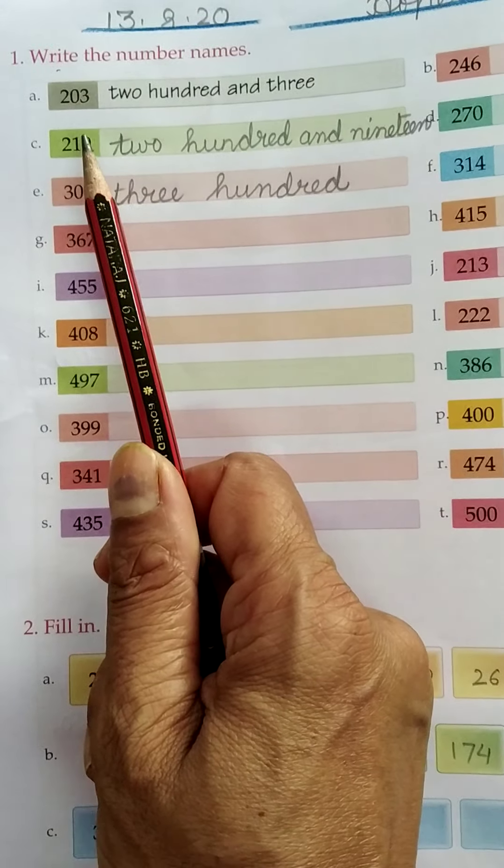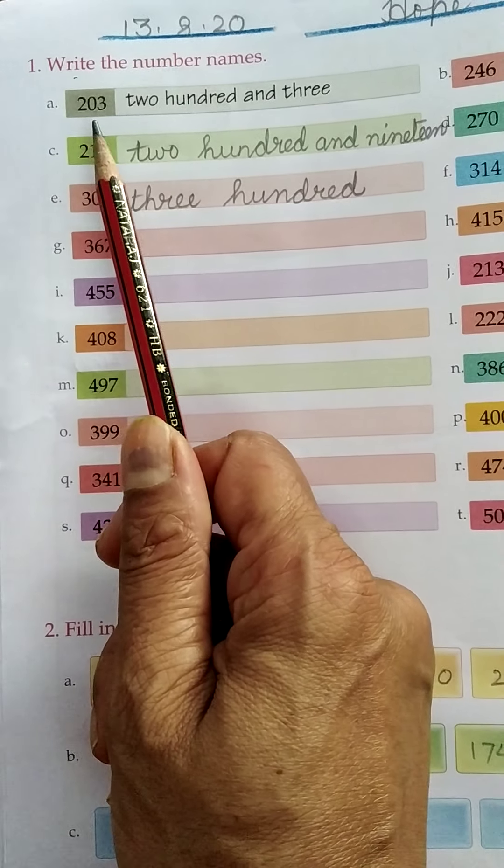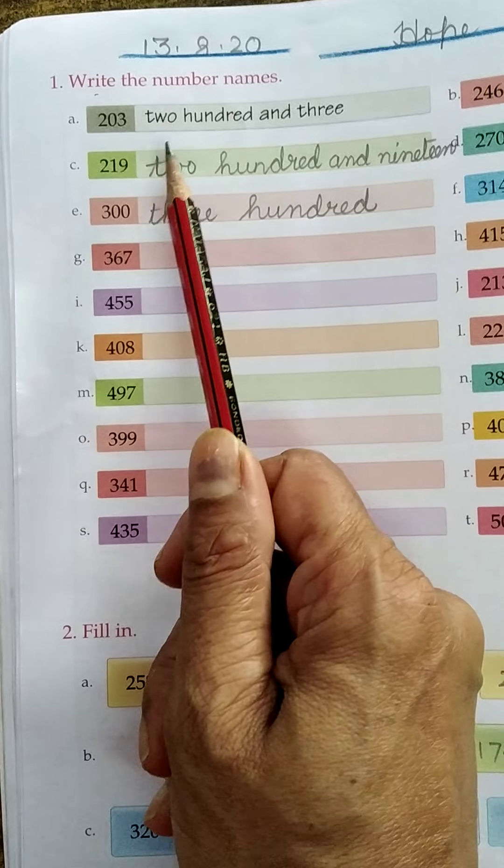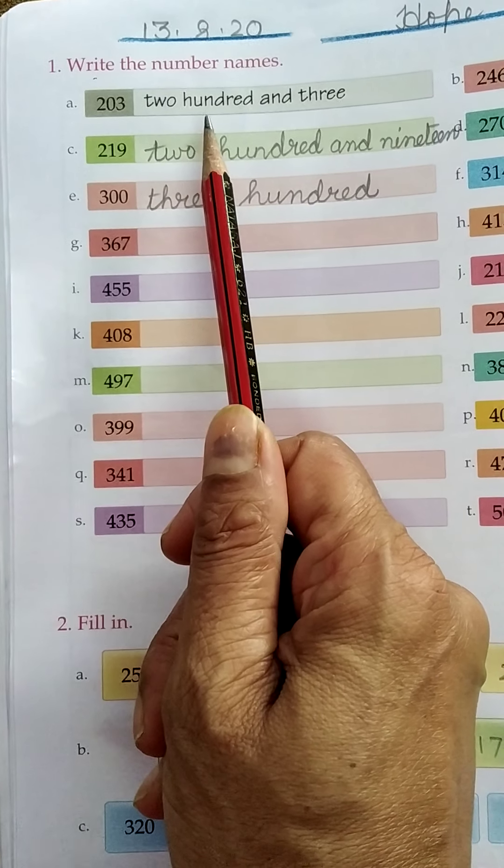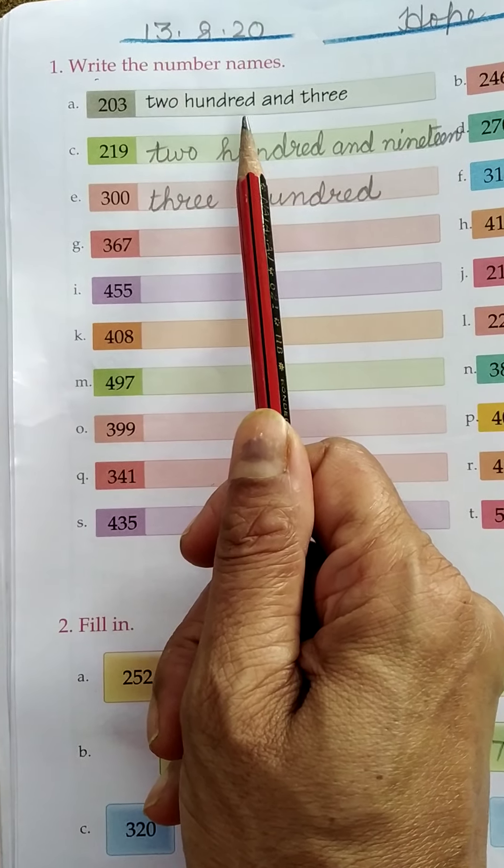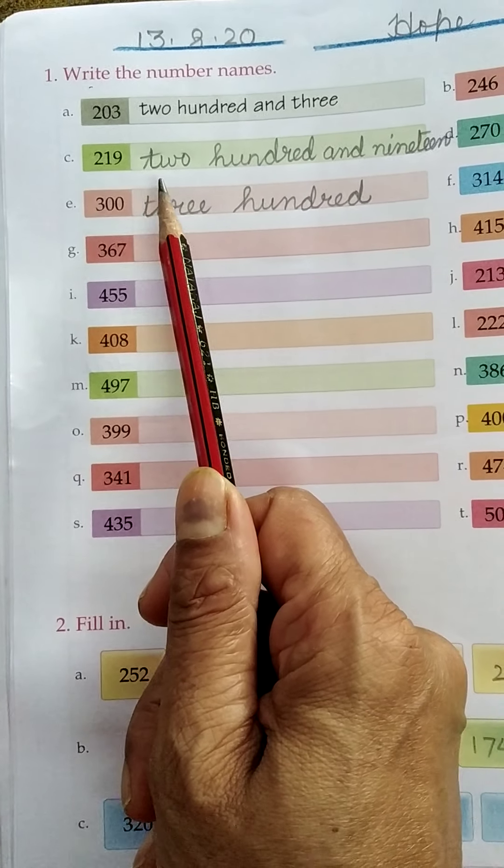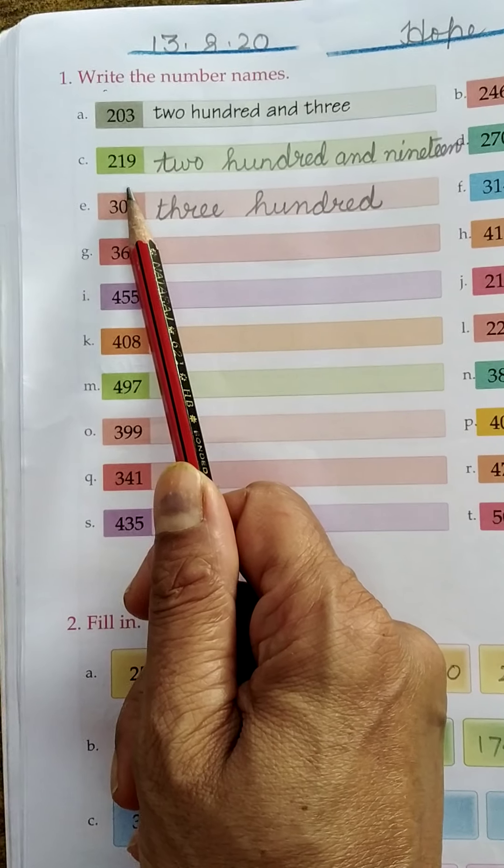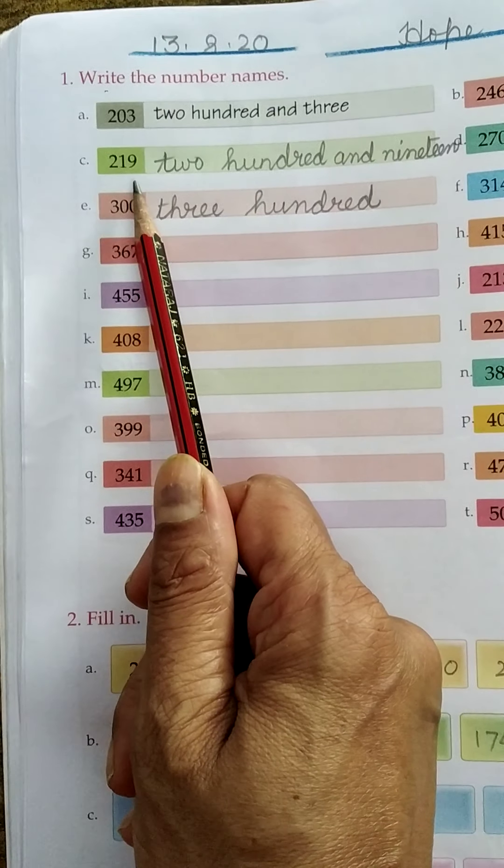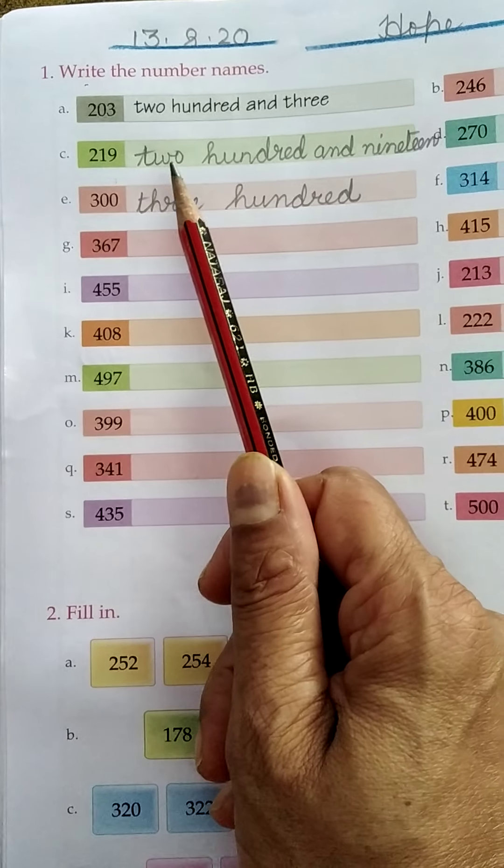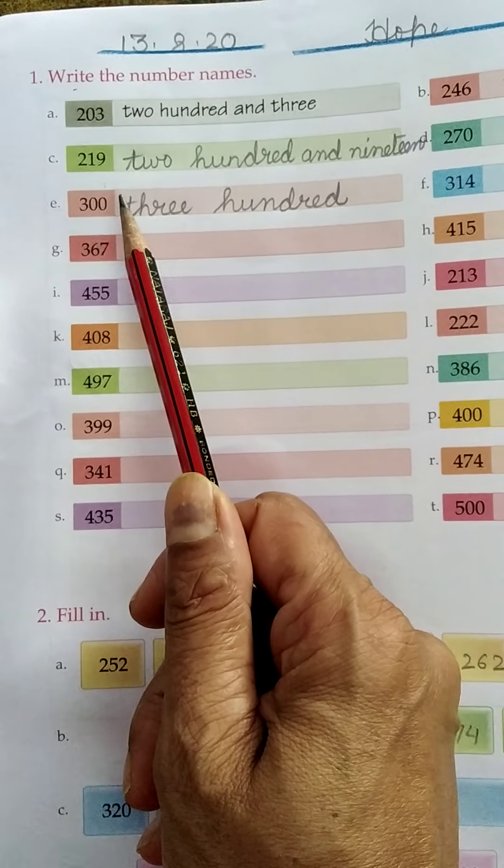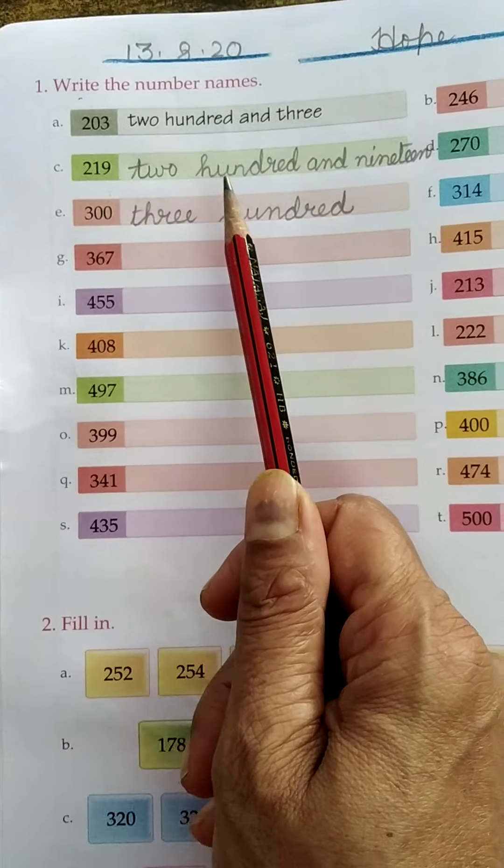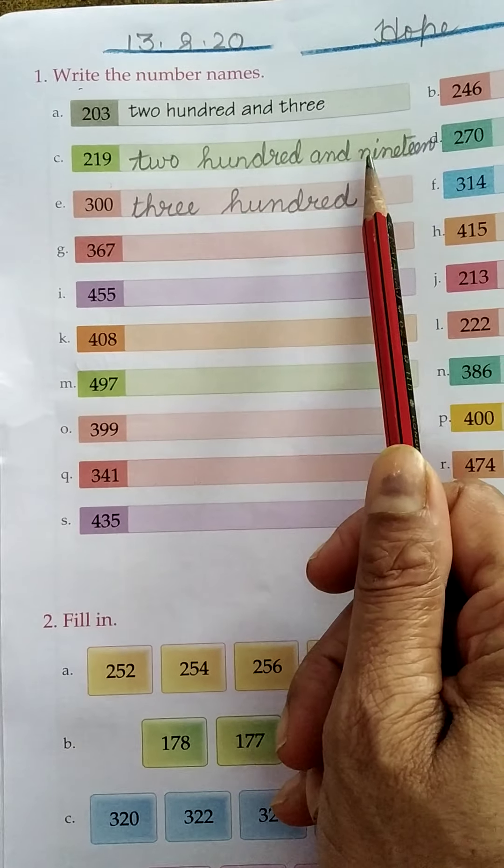First example given for you, 203. So two hundred and three. The spelling of 100 is H-U-N-D-R-E-D. And second spelling is 219. The number that is given to you is 219. You write the spelling of 219. So first we write 2, spelling of 2, then 100 and and.